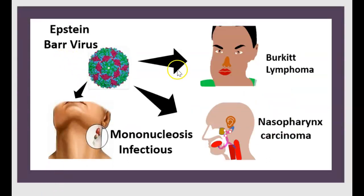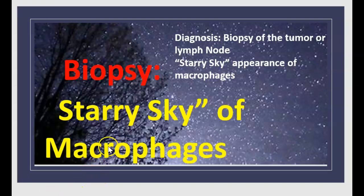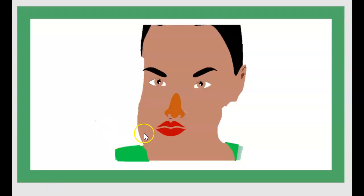Epstein-Barr virus is linked to Burkitt lymphoma, nasopharyngeal carcinoma, and infectious mononucleosis. Translocation 8-14 involves BCL-2. Diagnosis is by biopsy of the tumor or lymph node, with a starry-sky appearance of macrophages. Clinically, Burkitt lymphoma presents as swelling of the face and tumor of the facial bones, typically in African children.